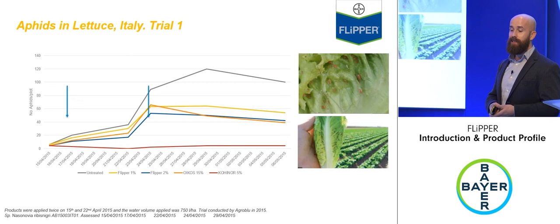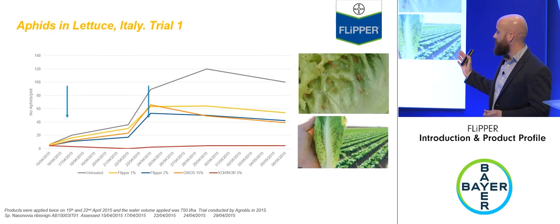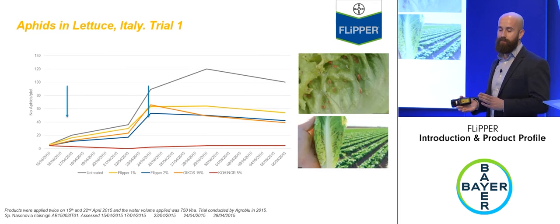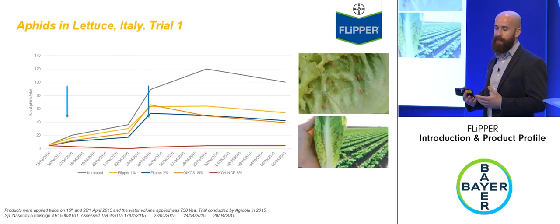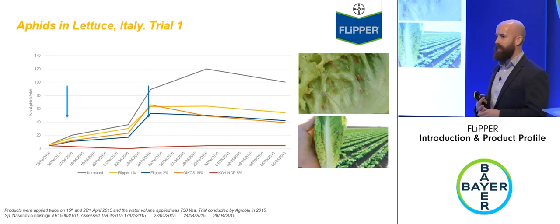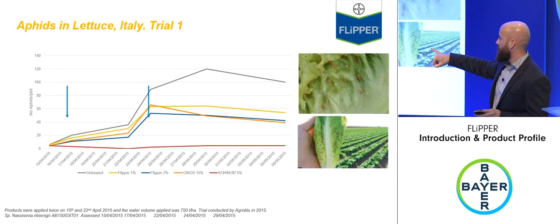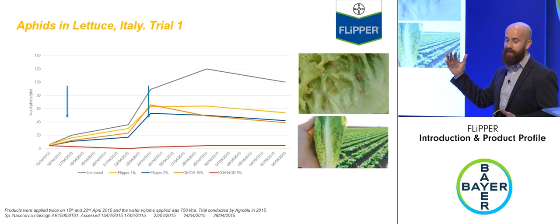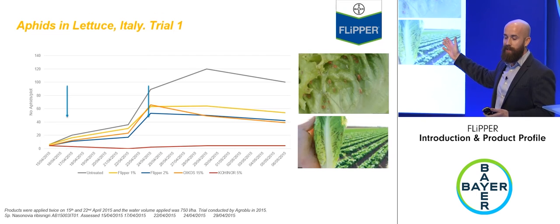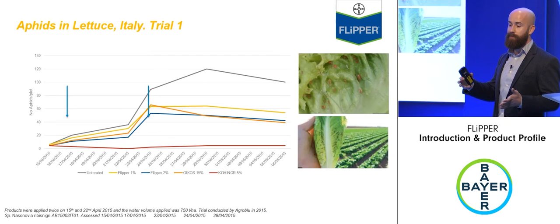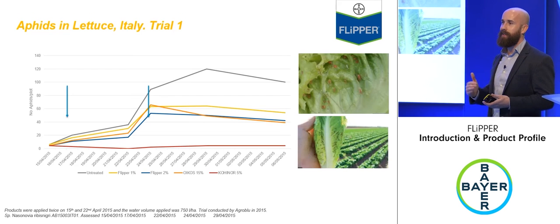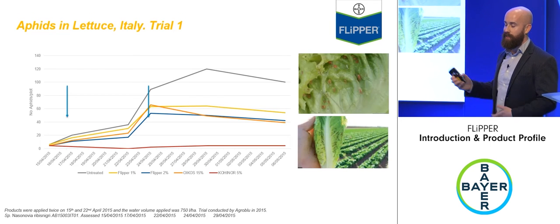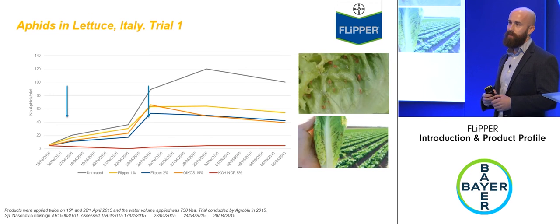In a lettuce aphid trial from around 2015, treatments included untreated, Flipper at two percent, Oikos (a biological competitor), and Conal (a neonicotinoid). The first application at the start of infestation build-up checked the population; the second application caught the aphid population just as it was exploding, doing a really good job of checking that surge — around 60-65 percent control from just two sprays of Flipper.